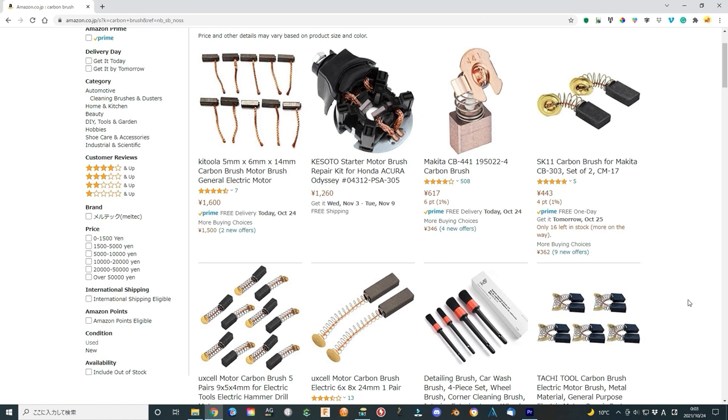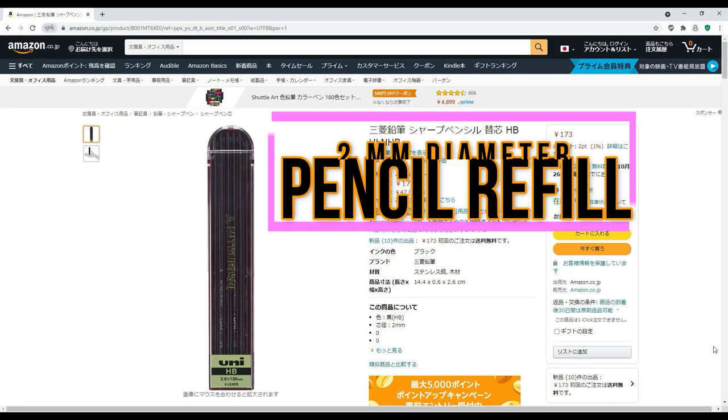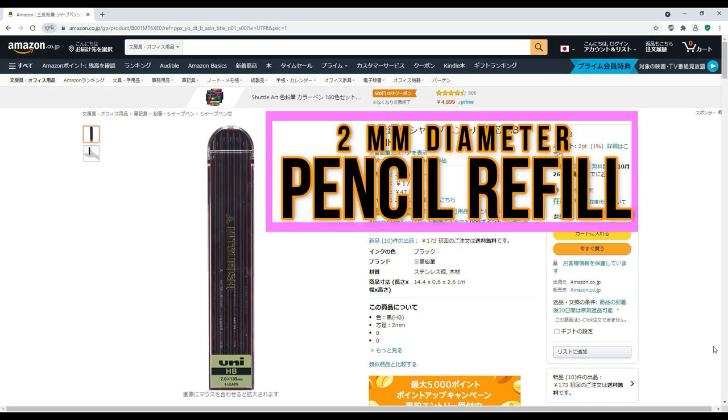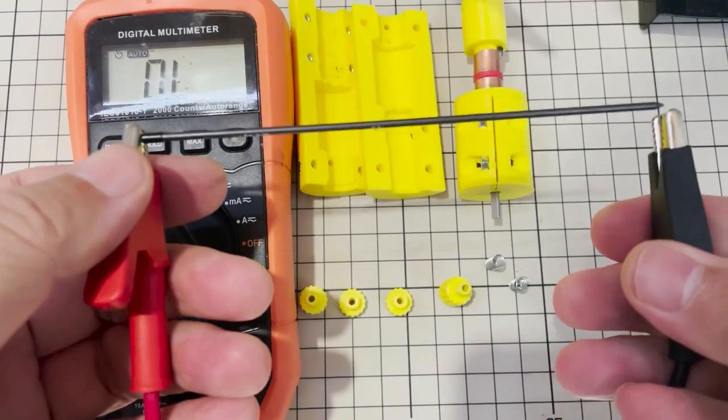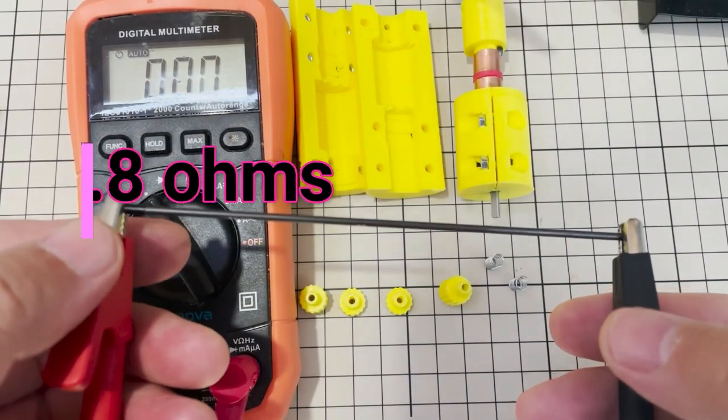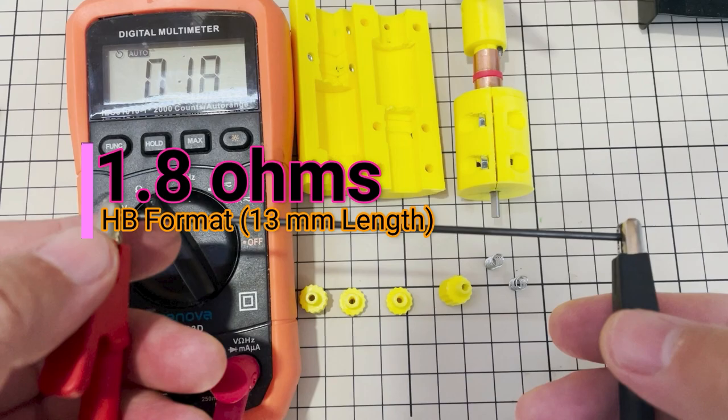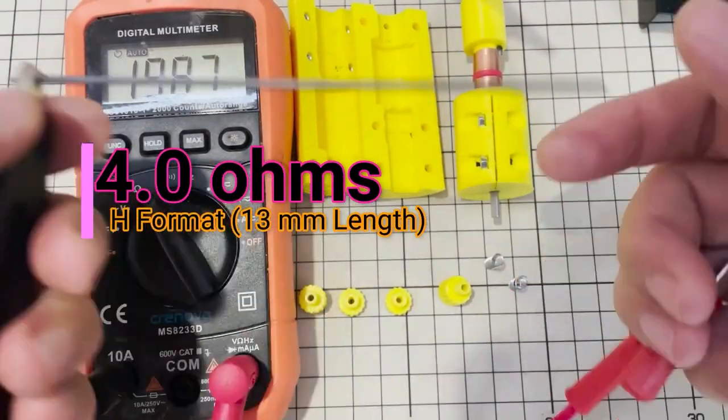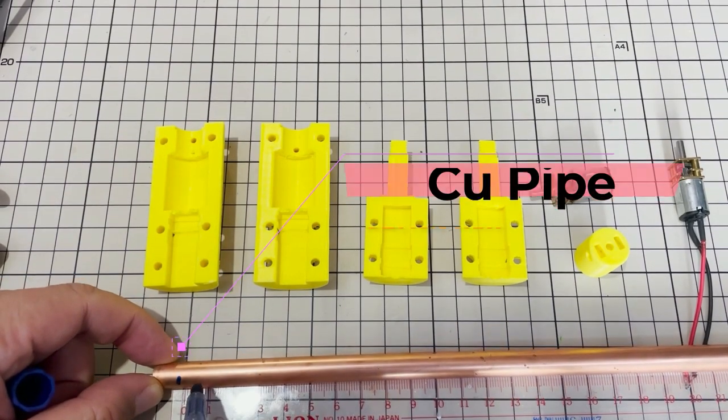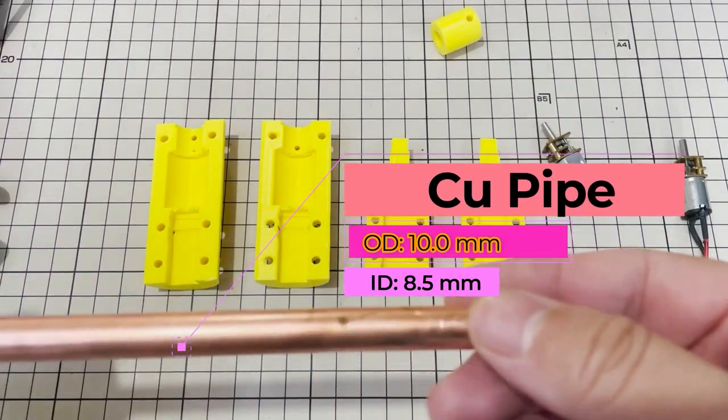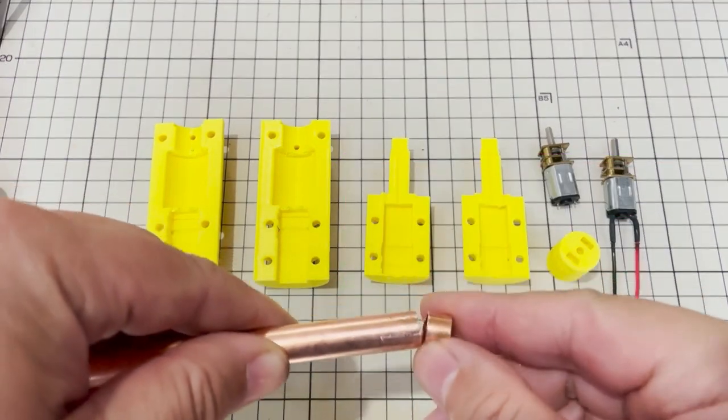But I don't want to buy a new carbon brush, and most carbon brushes are too large for my experiment. I will use a pencil refill. The refill is 2 mm in diameter. The HB format is about 1.8 ohms in 13 cm length. The H format has 4 ohms resistance. I will use HB refill and connect the gear N20 motor wires to 2 pieces of copper ring.